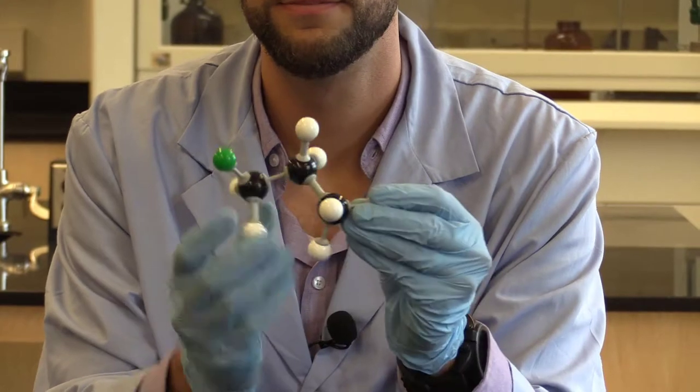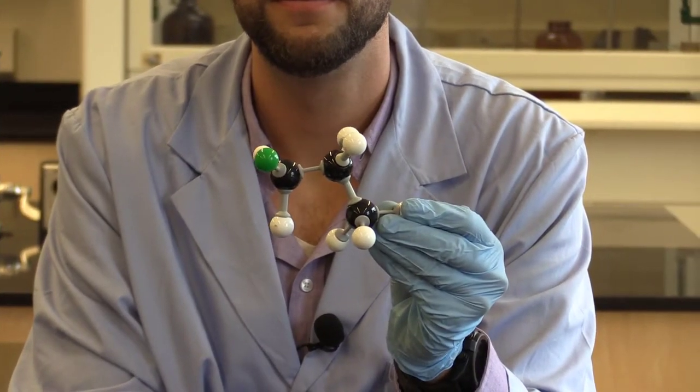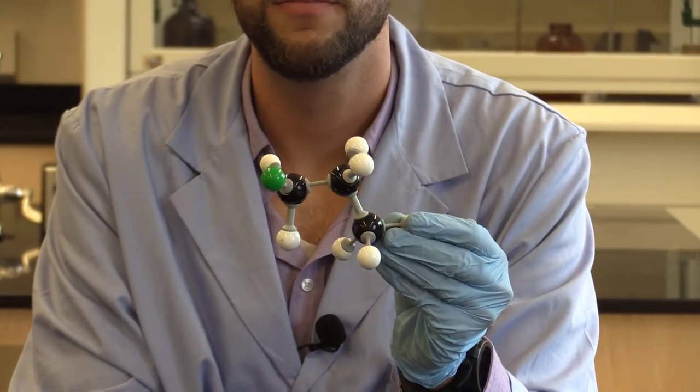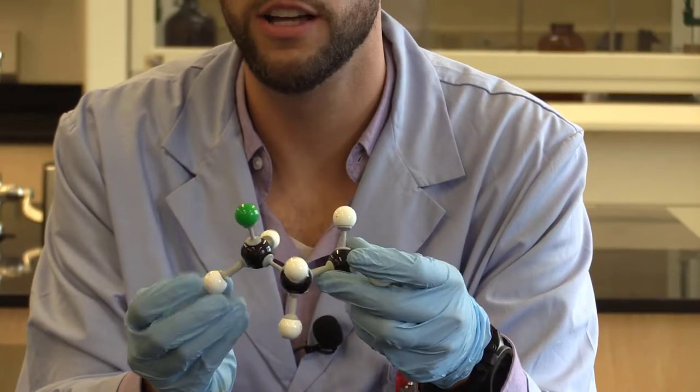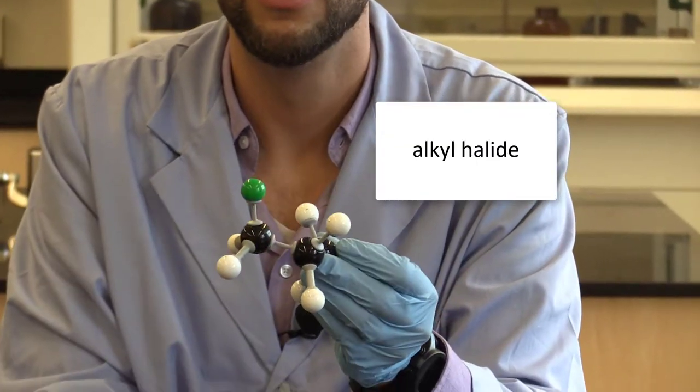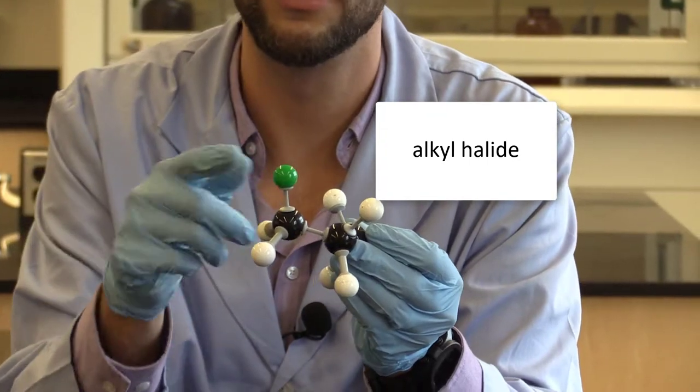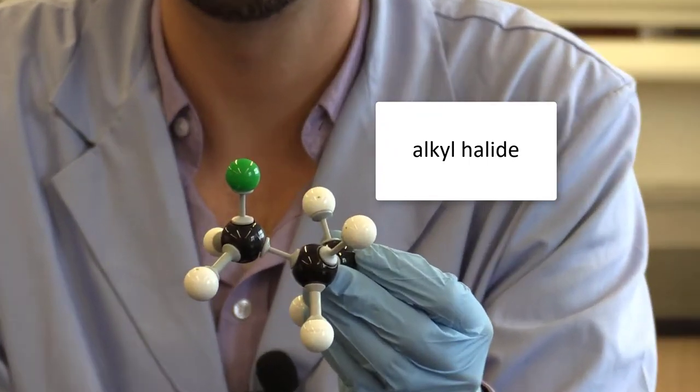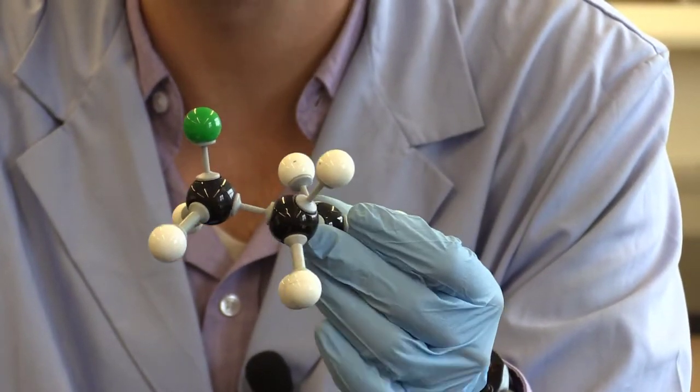Alright, on to our third one. If you said acyl halide, you are correct. There is our chlorine. And remember, this chlorine could be replaced with other halogens, and it would still be the same functional group.